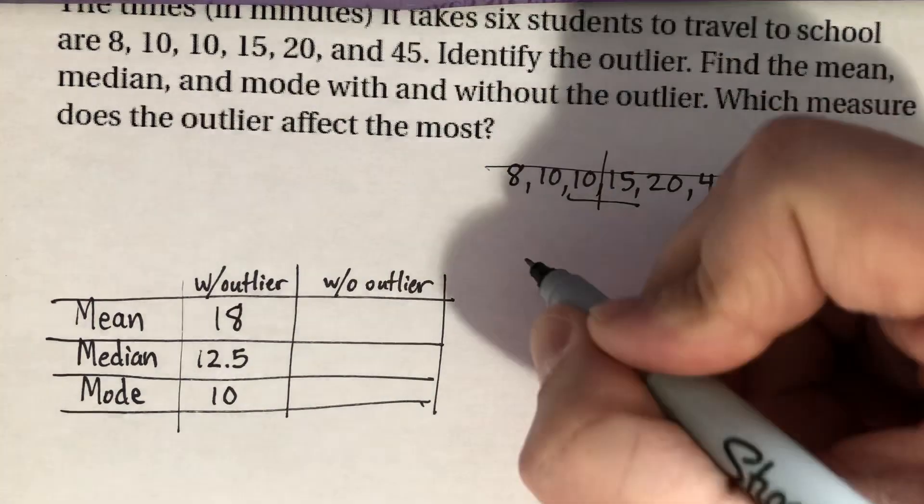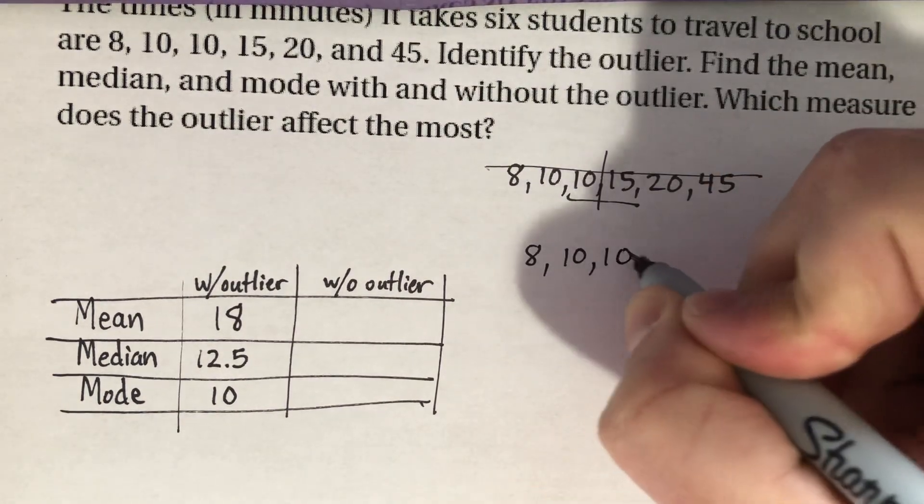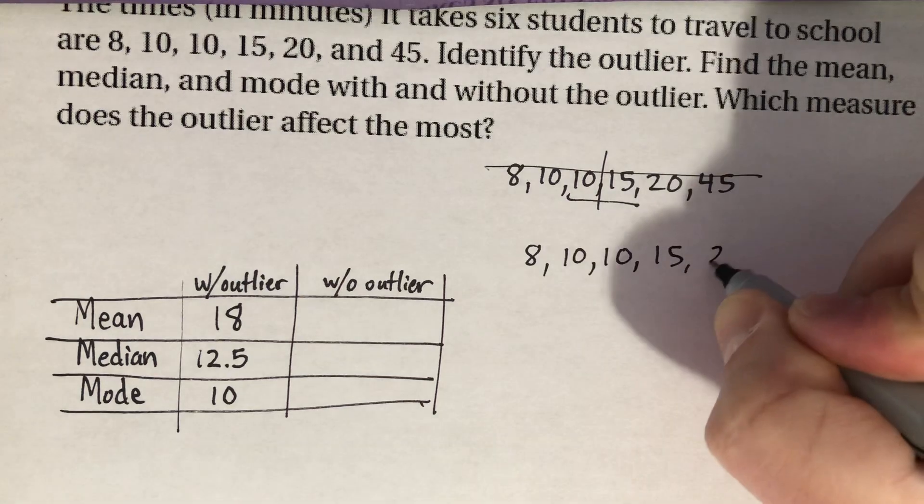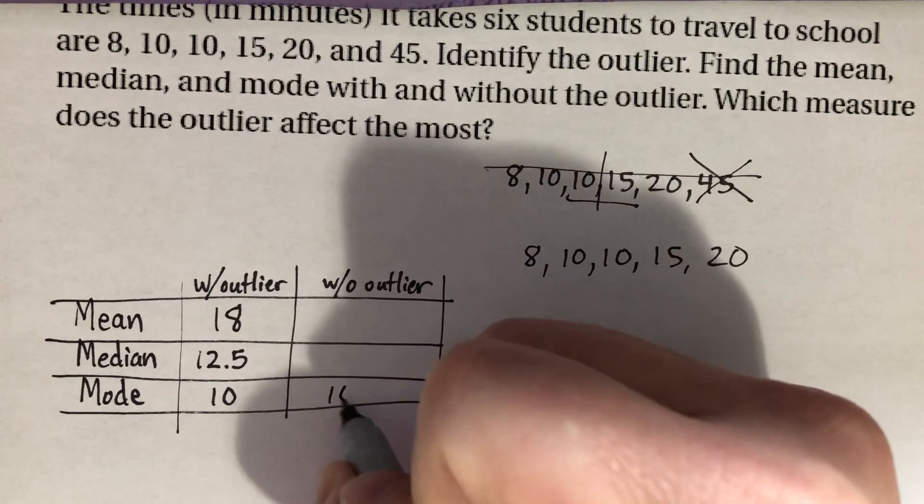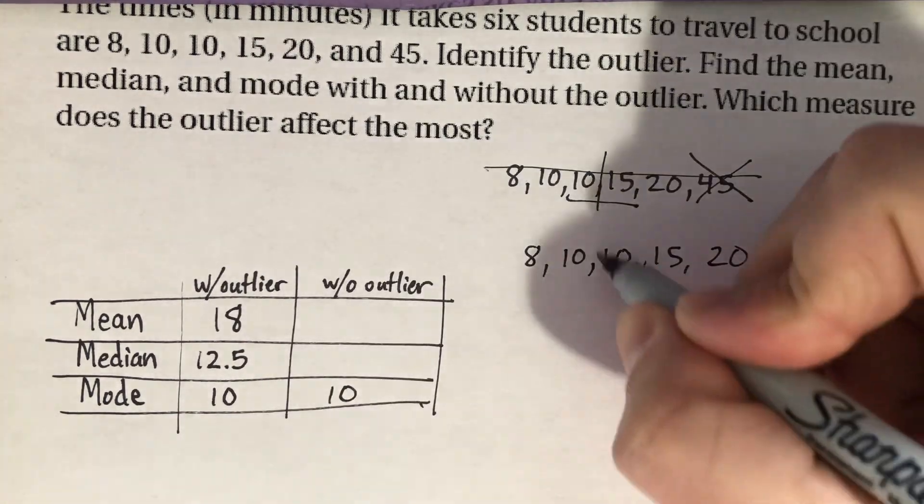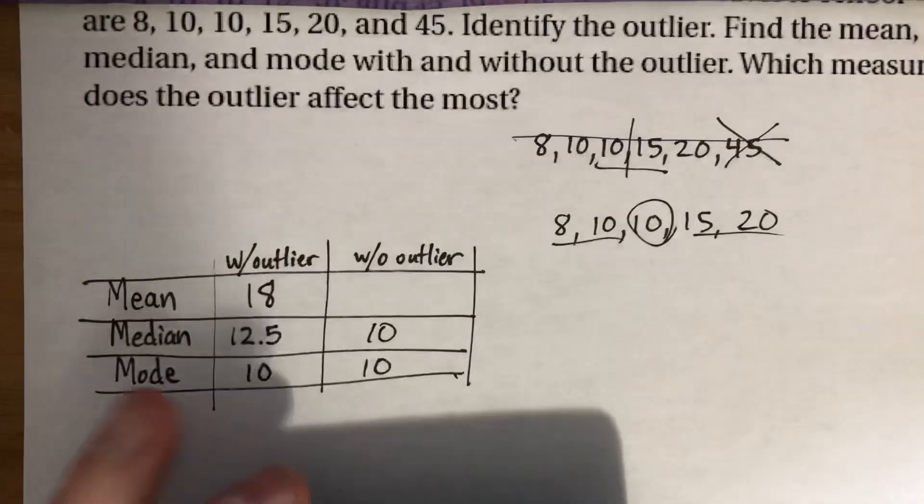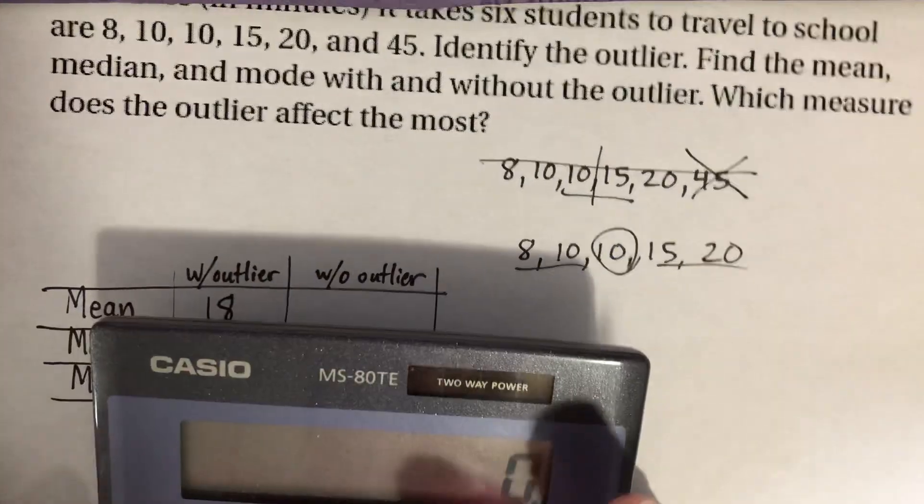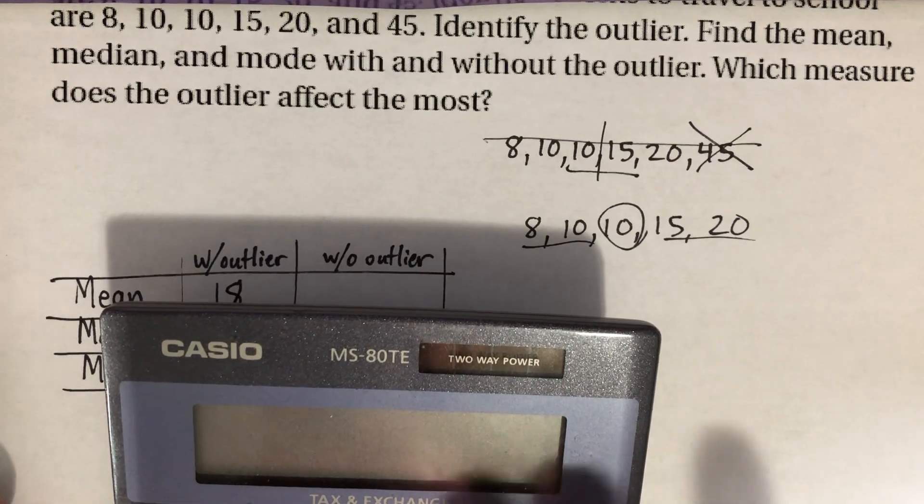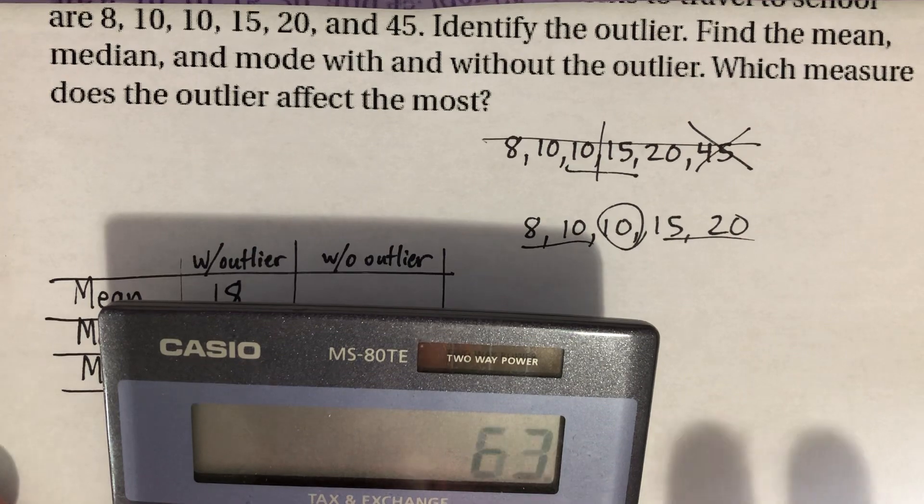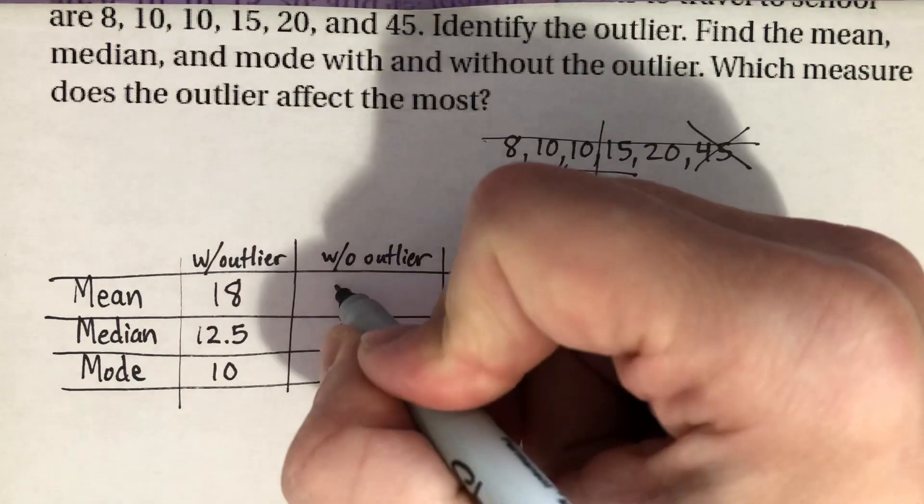So now I'm going to go ahead and rewrite this. But now it's going to be 8, 10, 10, 15, 20, because I'm basically eliminating that outlier from the data. My mode would still be 10. And my median now is also 10. It's right there in the middle. And now as I calculate my mean, I'm just adding 8, plus 10, plus 10, plus 15, plus 20. And now I'm dividing by five, because there's only five terms. And I'm getting 12.6.